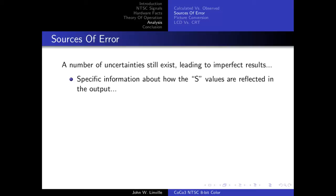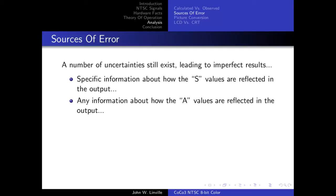There are a number of uncertainties that lead to some imperfect results. I probably need better information about how S values are reflected in the output — for example, the scale I'm applying might be non-linear, might have different boundaries, and the offset might be wrong. What probably needs to happen is getting a logic analyzer on the actual pins of the GIME to test some of this. I also don't have any information about how the A values are reflected in the output — I have a couple of thoughts on how it might work but haven't modeled it out yet.